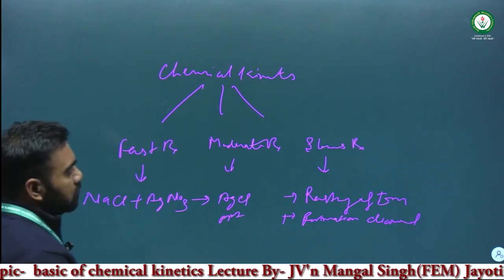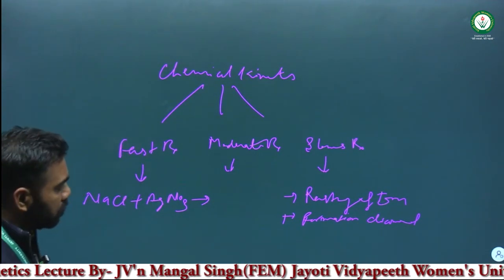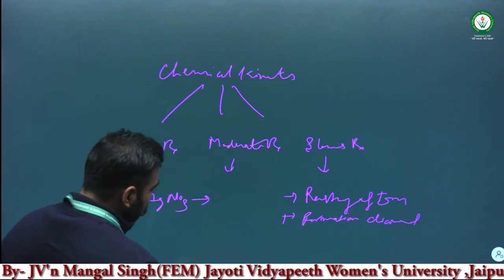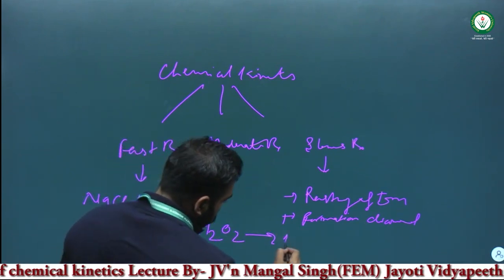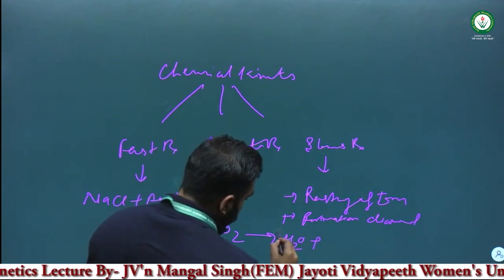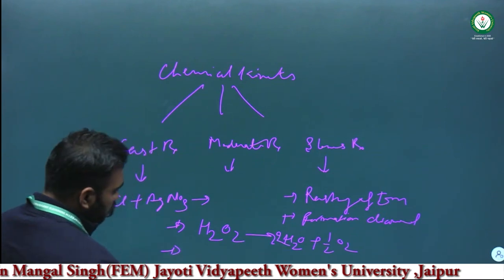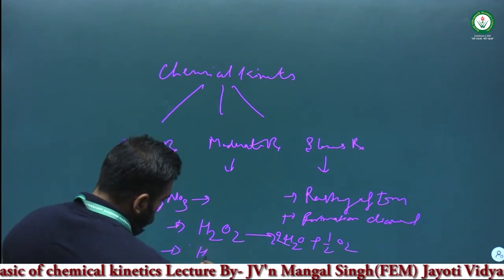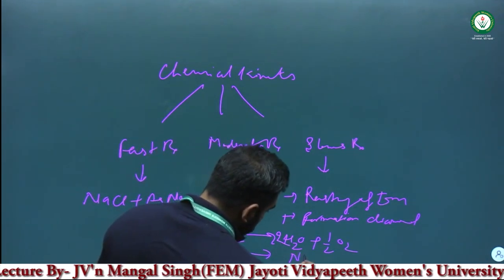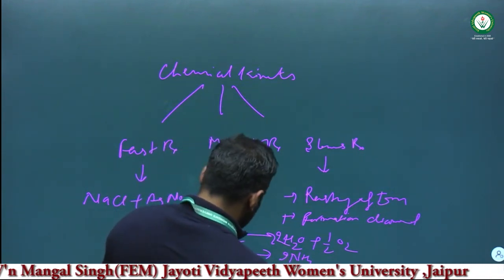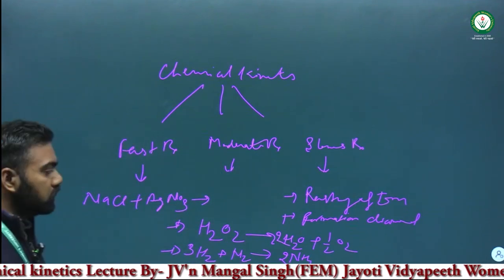The third class is moderate type of reactions. Examples of moderate reactions include the formation of water from H2O2, and the formation of ammonia from hydrogen and nitrogen — these types of reactions come in the moderate category. In chemical kinetics, we generally discuss all three types of reactions.